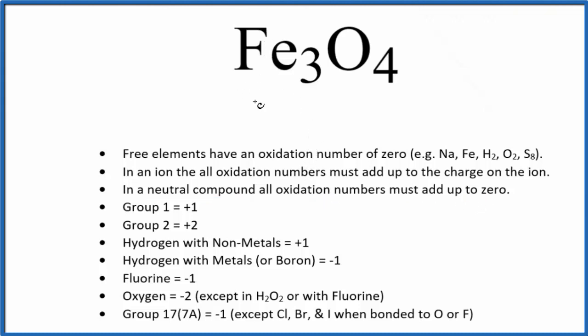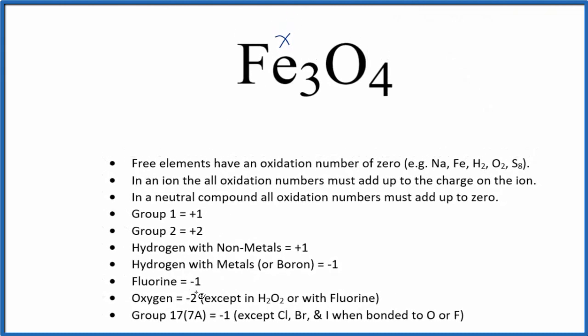We don't know the oxidation state for the iron. It's a transition metal. It can have different states. So let's call that X. And then oxygen, that's almost always negative two, except in peroxides and bonded to fluorines. But here it's bonded to iron. So we're going to say that each oxygen is negative two, and that all of the oxidation numbers for the elements are going to add up to zero.